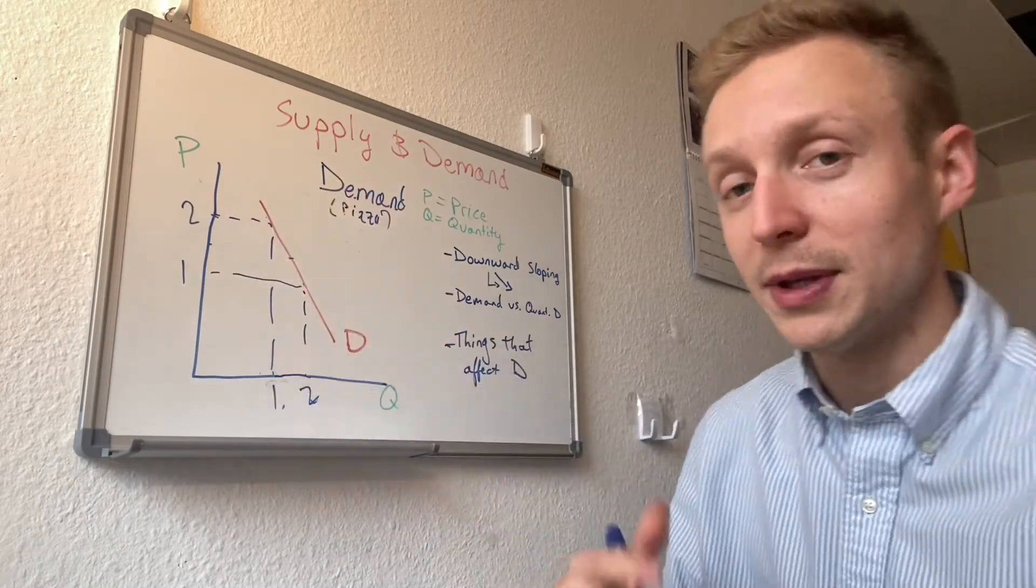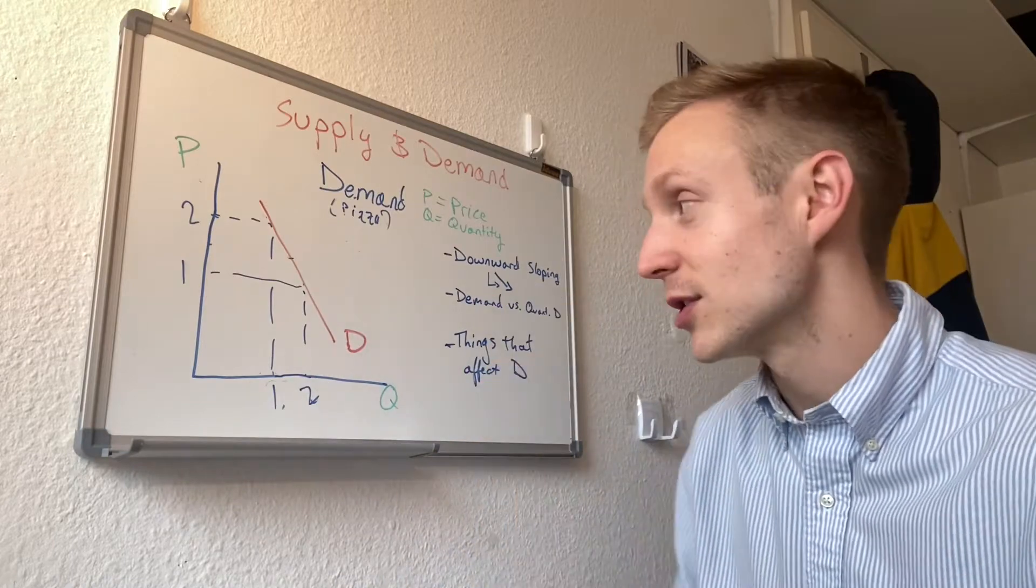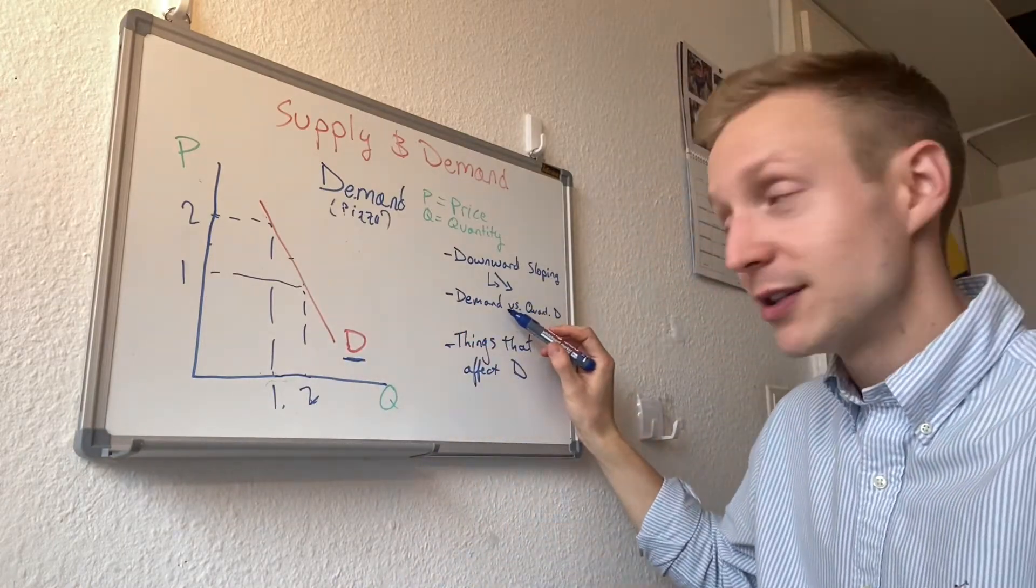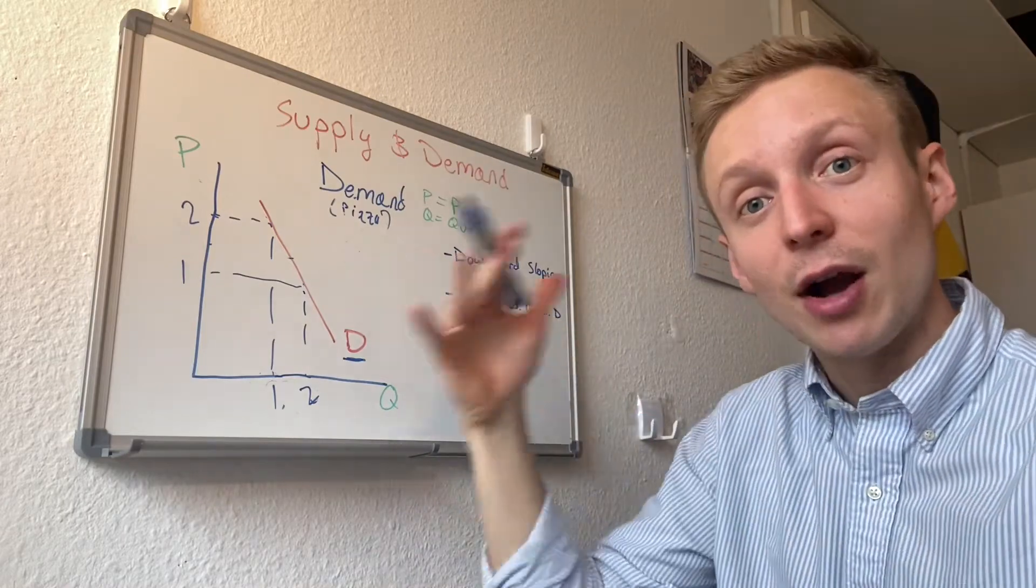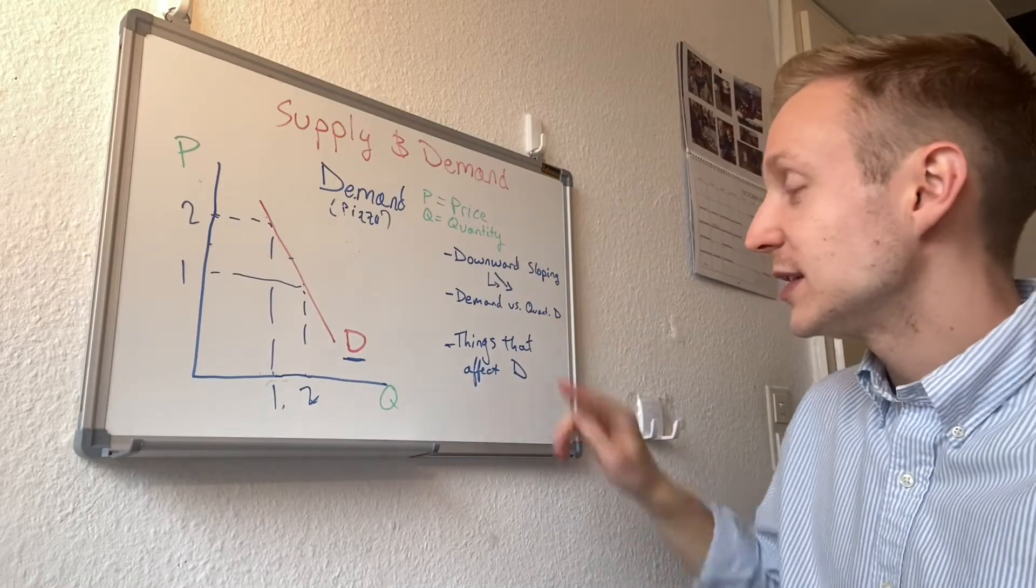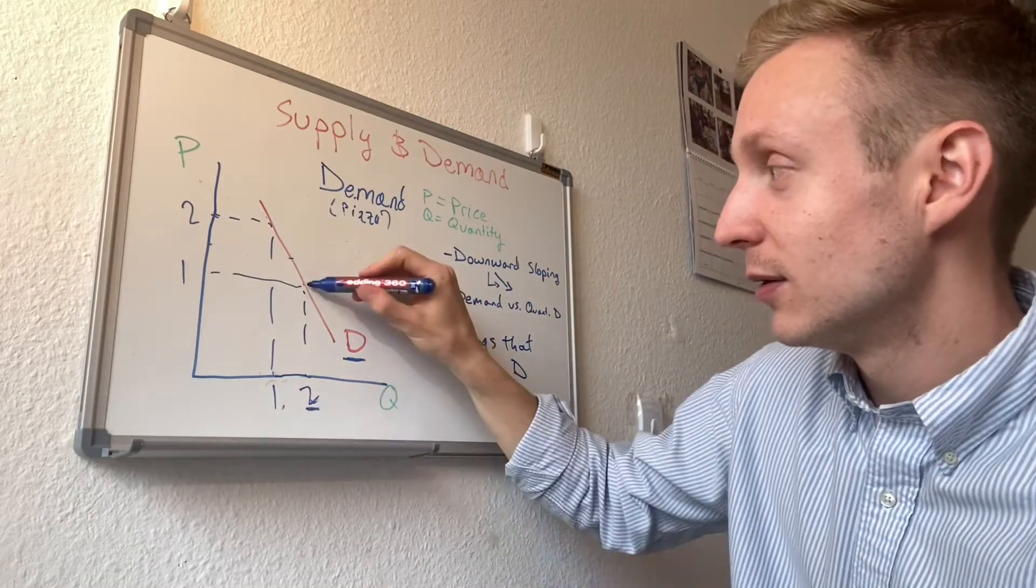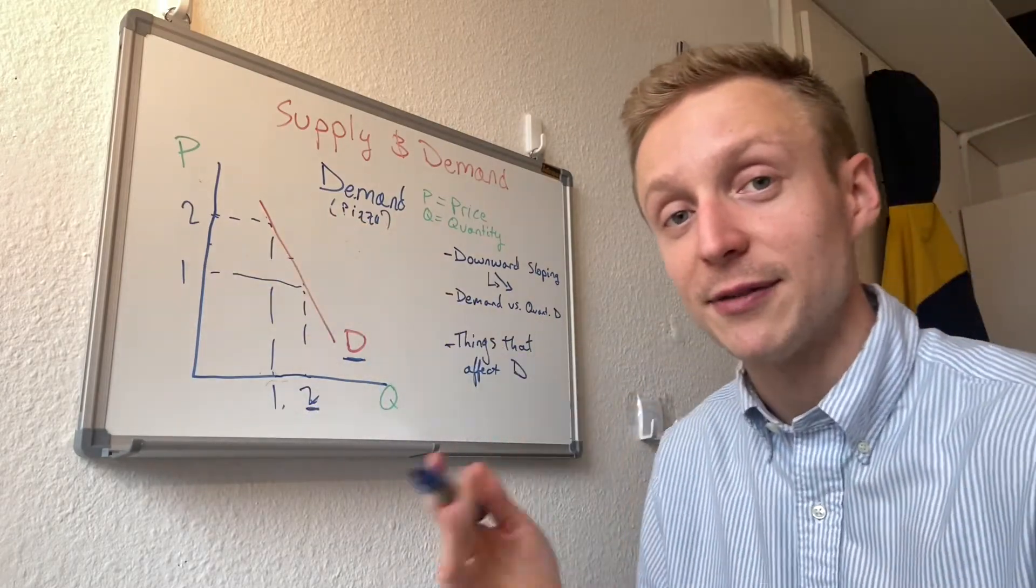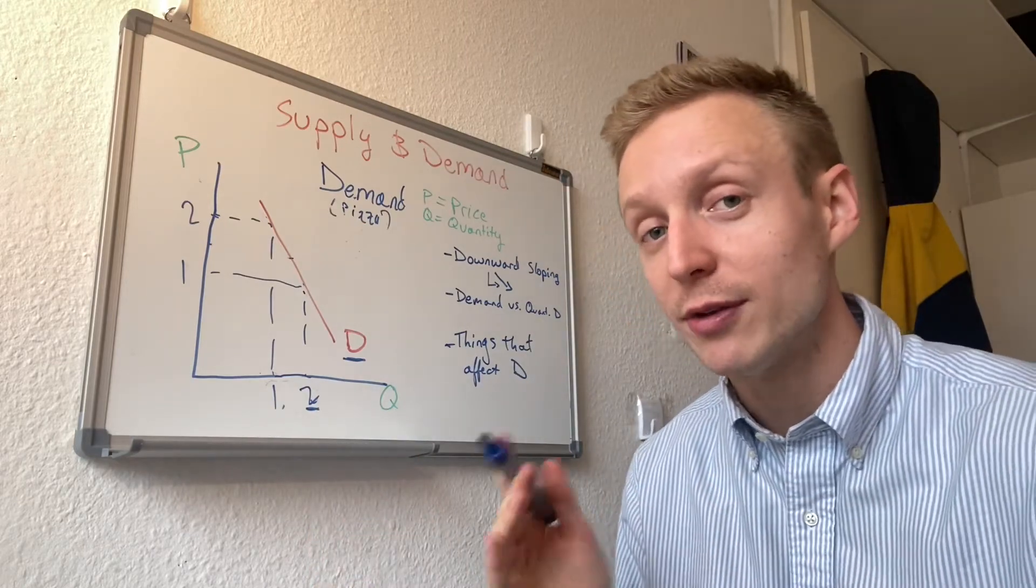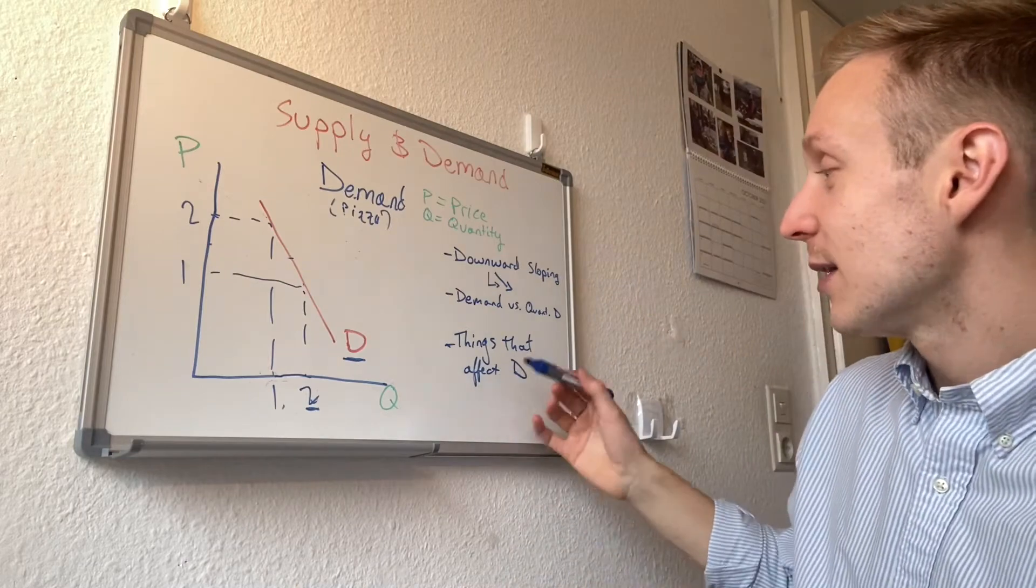And we have to make this difference. This is demand, meaning all of it, like aggregate, the total. And then quantity demanded is this number that corresponds to a specific price. So quantity demanded and demand are two different things. That's very important.